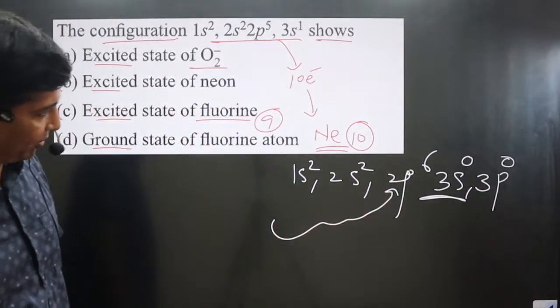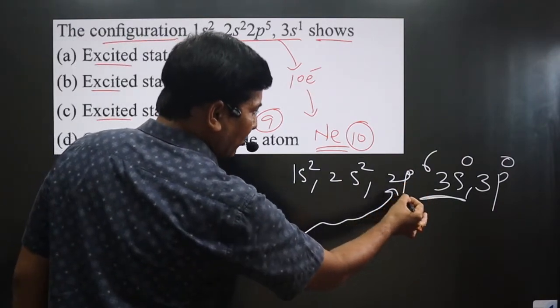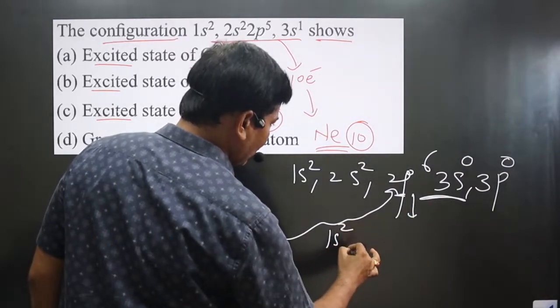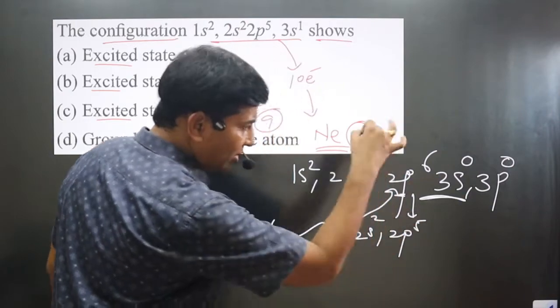When an electron jumps from lower orbit to higher orbit, we get the electronic configuration: 1s² 2s² 2p⁵ (one electron jumped from lower orbit to higher orbit) and 3s¹.